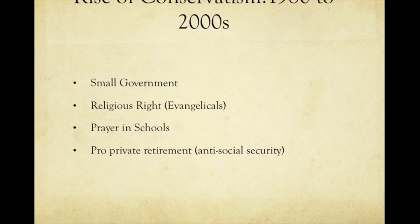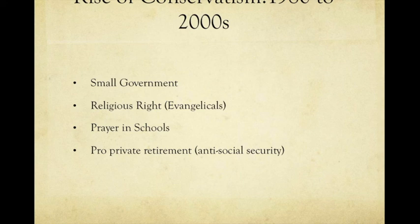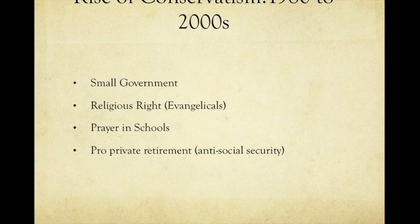From 1980 to 2000 and beyond, conservatives believe in small government. The Republican Party has always believed in small government, but this really becomes a core part of their platform from 1980 to 2000 and still. You will also see the rise of the religious right and evangelicals and their influence on conservatives — they advocated for prayer in schools. Conservatives were also pro-private retirement and anti-social security, believing people get too dependent on social security and don't save enough for retirement.